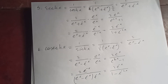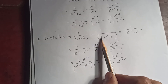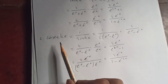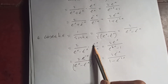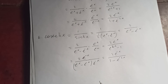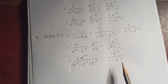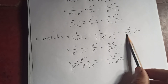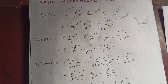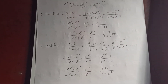Cosec hyperbolic is 1 upon sinh, and since sinh is (e to the x minus e to the negative x) over 2, csch(x) equals 2 upon (e to the x minus e to the negative x). Multiplying by e to the x gives 2e to the x upon (e to the 2x minus 1). Multiplying by e to the negative x gives 2e to the negative x upon (1 minus e to the negative 2x). So csch(x) can be expressed in these three forms. That covers the basic hyperbolic function relations to the exponential function.